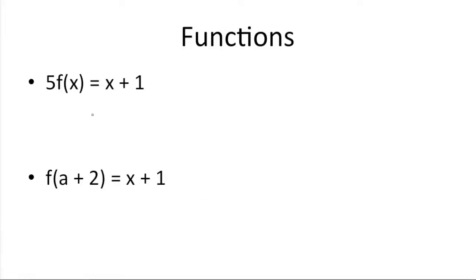There's some other ways you might encounter functions on the SAT or ACT. For instance, here we have five on the outside of the function f of x is equal to x plus one. All you're doing here is multiplying the function by five. So you're going to take whatever x plus one is, depending on the variable here, taking that answer, and then multiplying it by five.